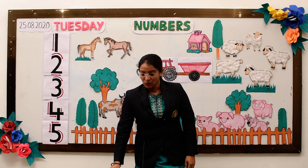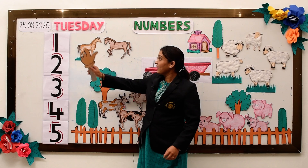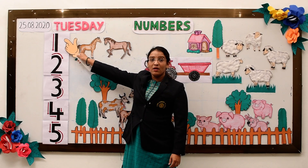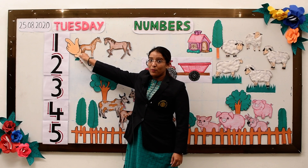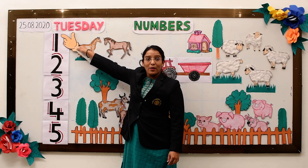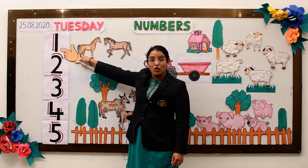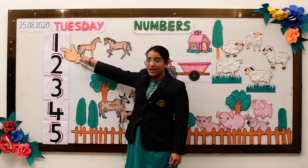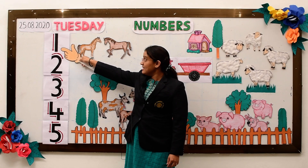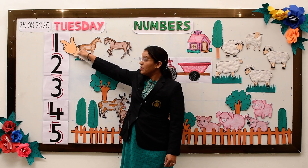So we start with the formation of the numbers. This is number 1. The formation of number 1 is a standing line from the top to the bottom.